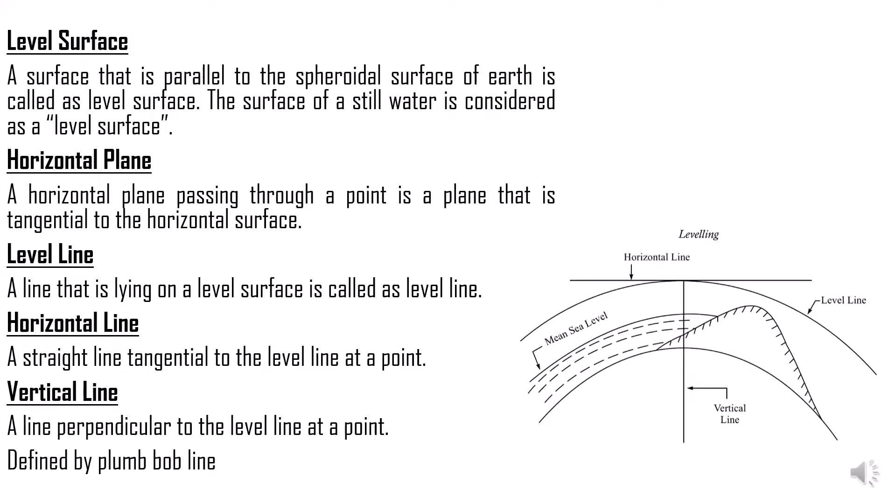Second is a horizontal plane. A horizontal plane is a plane that is passing through a point tangential to the level surface. A plane that is tangential to the level surface is what we call a horizontal plane. The level surface and horizontal plane have to be imagined in 3D — you have the 3D sphere of level surface, and a plane tangential to it is the horizontal plane.